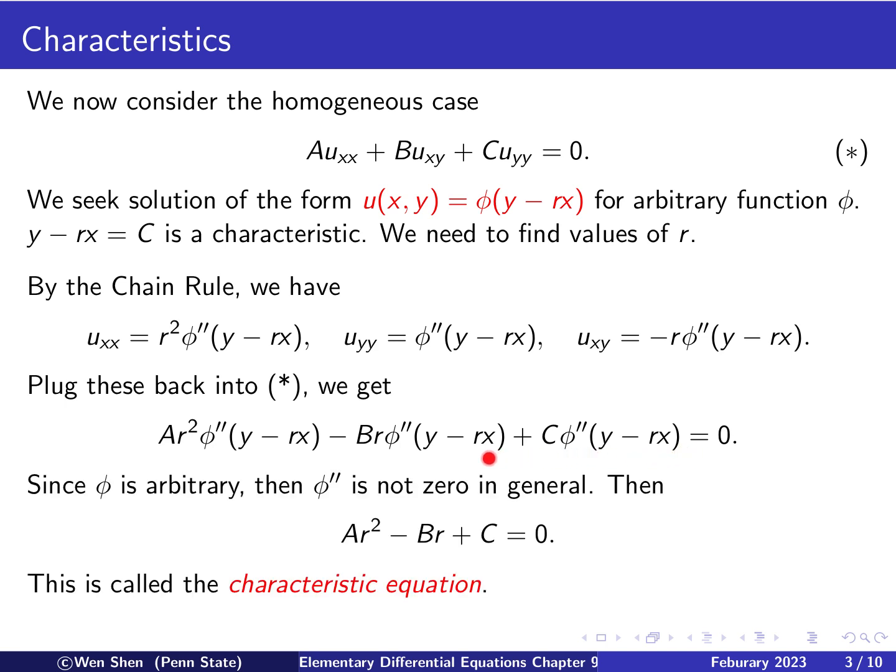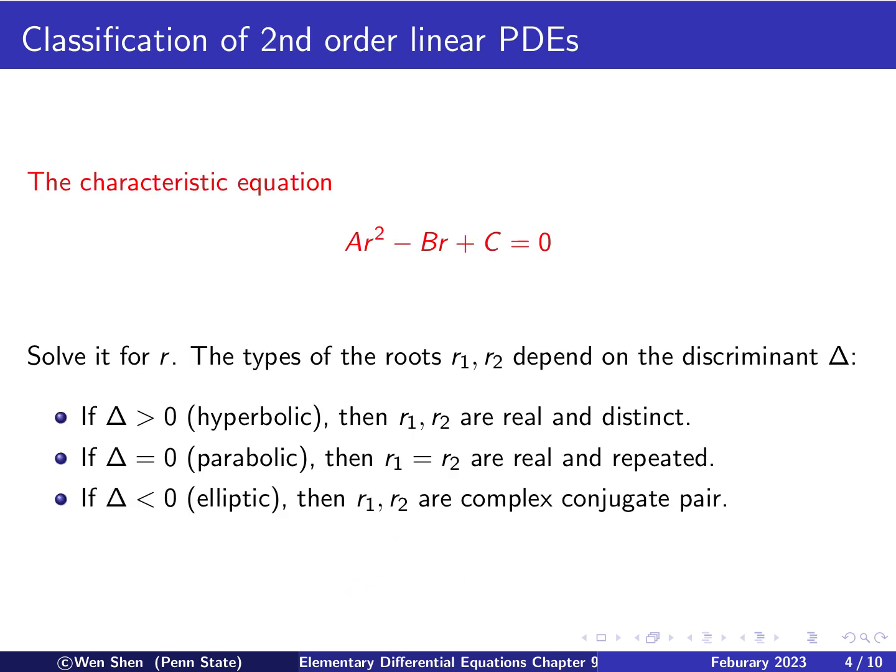So, we see that in this equation we have derived, there is a common factor phi double prime. So, phi is an arbitrary function, therefore, phi double prime is not 0 in general. If you want this to hold for any arbitrary functions of phi, then you can just drop this phi, and then you must require what remains to be 0. So, we get A times r squared minus Br plus C equals 0. And we see that is a second order polynomial in r. This equation is called the characteristic equation, or the characteristic polynomial.